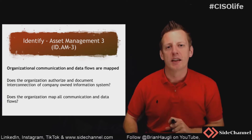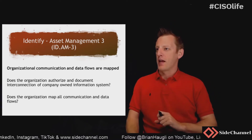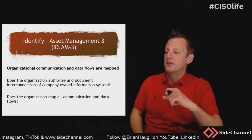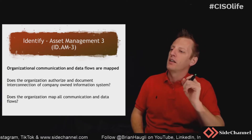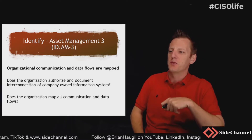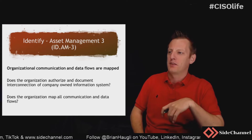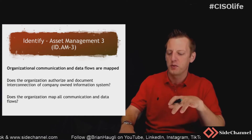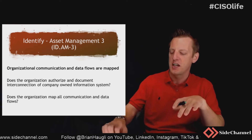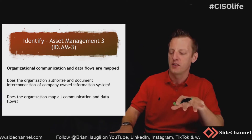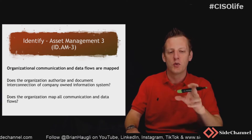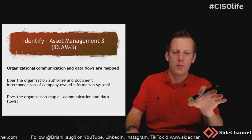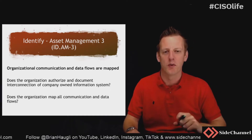The third control in the asset management subfamily is: organizational communication and data flows are mapped. This happens to be one of my favorites. Regularly, whenever I sit down with an organization or a client, I ask about two things: show me the architectural diagram, and show me the data flows for the system.